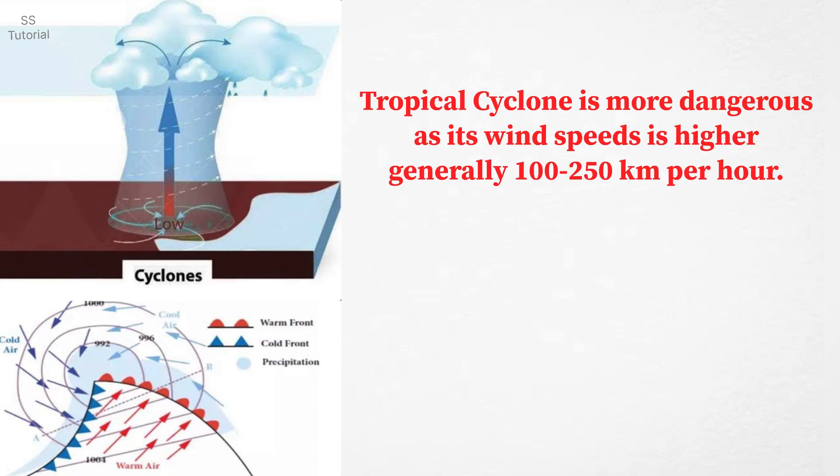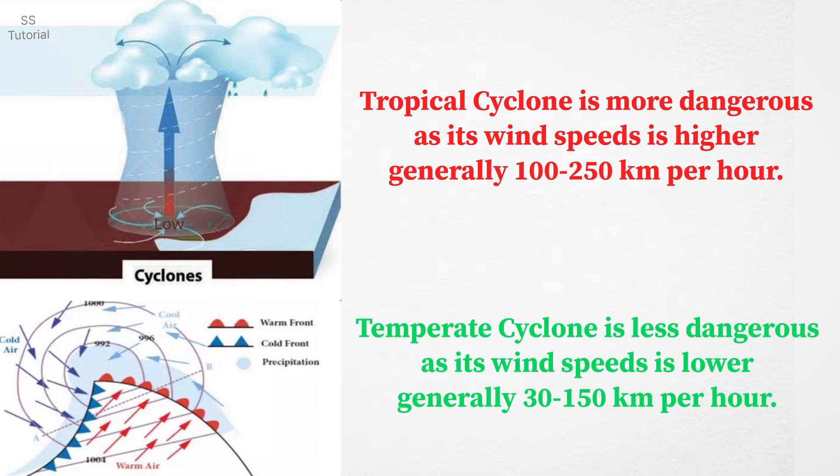Tropical cyclone is more dangerous as its wind speed is much greater, usually 100 to 250 kilometers per hour. Whereas temperate cyclone is less dangerous as its wind speed is much lower, typically 30 to 150 kilometers per hour.